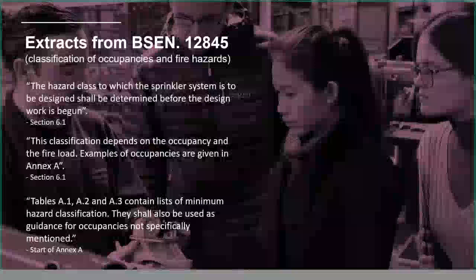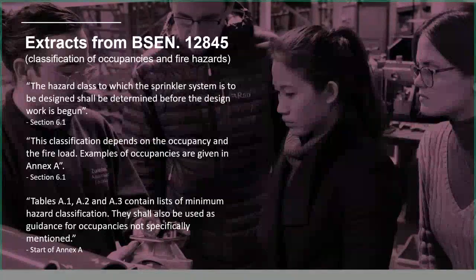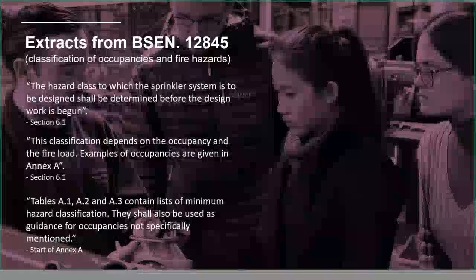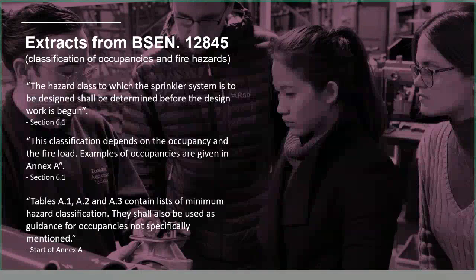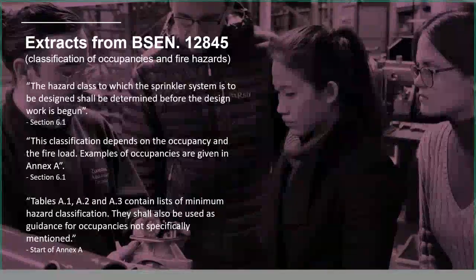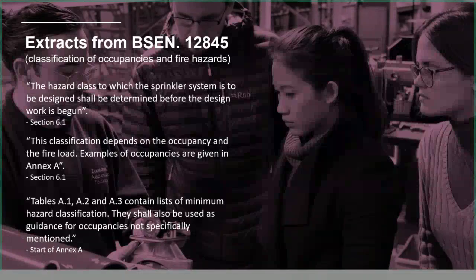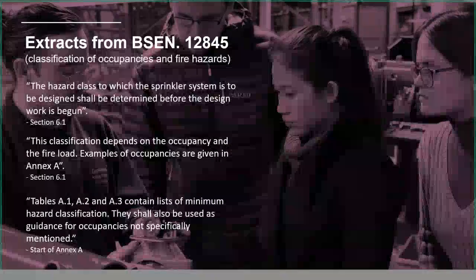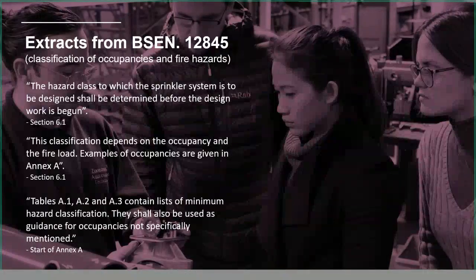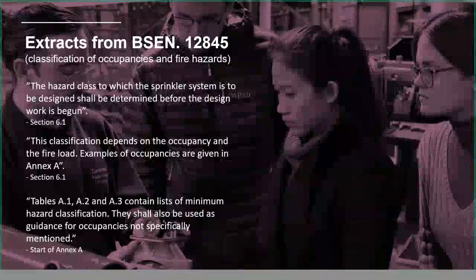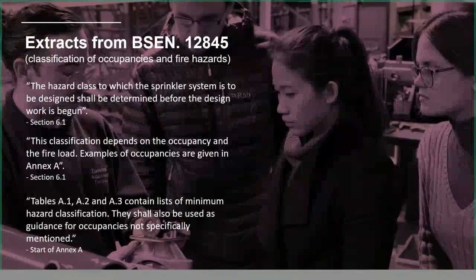The hazard class to which the sprinkler system is to be designed shall be determined before the design work is begun. That's common sense — deciding the hazard category is one of the first things that needs to be agreed. The sprinkler designer can't design until he knows the category, and a lot of the system cost depends on it: pipe materials, sprinkler head type, and whether it's for life safety.